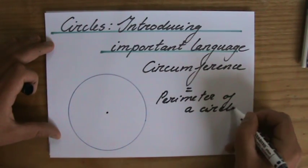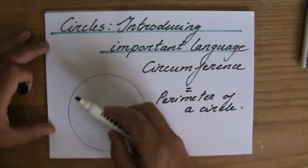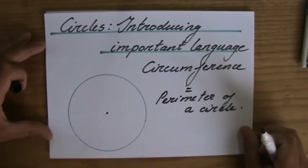Okay? So don't get confused. It means the same thing. It's the length of the outside. So area is area, but the circumference we use to talk about the length of the outside.